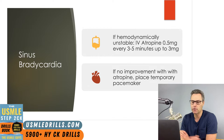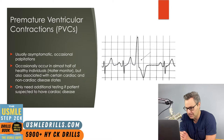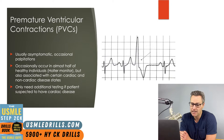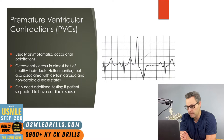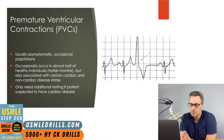Quickly reviewing premature ventricular contractions: PVCs are common and most healthy individuals will occasionally have a premature ventricular beat. Individuals who are unlikely to have underlying heart disease, have no symptoms, and have less than 500 PVCs per 24 hours generally don't require additional testing. PVCs are considered self-limiting, rarely life-threatening, and usually do not require treatment.